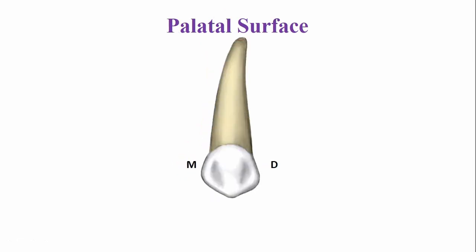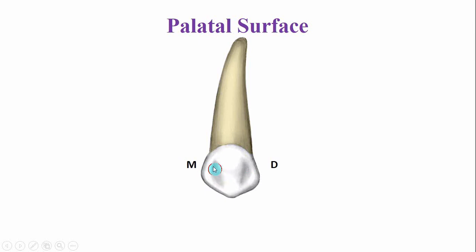This is the palatal aspect. Looking from the palatal aspect, this is the crown portion and this is the root. On the palatal crown surface, you can see a ridge dividing the lingual fossa into two halves. The fossa near the mesial surface is known as the mesiopalatal fossa, and the other is known as the distopalatal fossa.